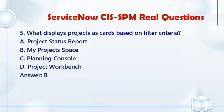Question 5: What displays projects as cards based on filter criteria? a. Project status report. b. My Project's Space. c. Planning console. d. Project workbench. Answer: B.